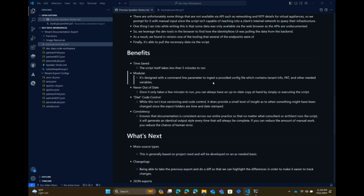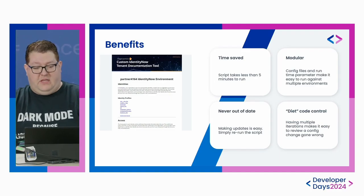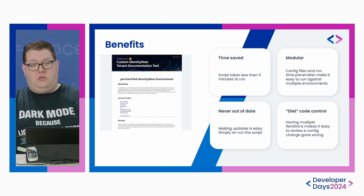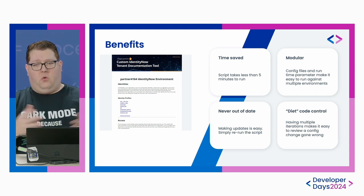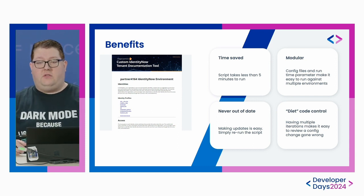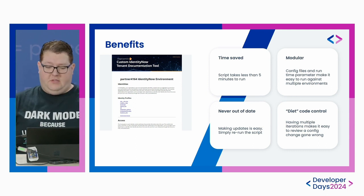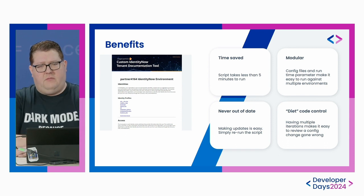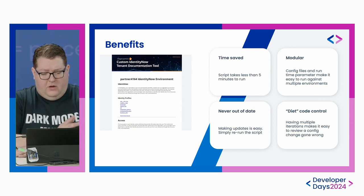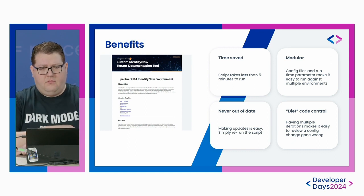It's more modular too. The original version used a command line parameter where you'd say dash config-file and declare your config file with your tenant information. This new version implements a file picker — you just say give me this JSON file and it runs, making it more user friendly. Because we can iterate quickly, the data is never out of date. It's still a point-in-time snapshot, just like a Word document, but you can run it as many times as you want and always have those snapshots to reference — it's sort of a diet version of code control.